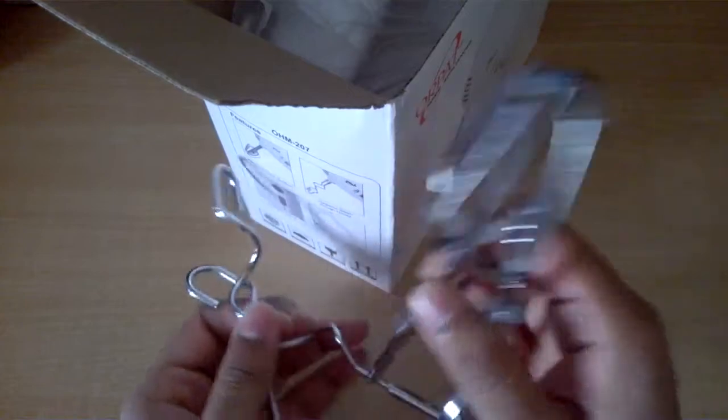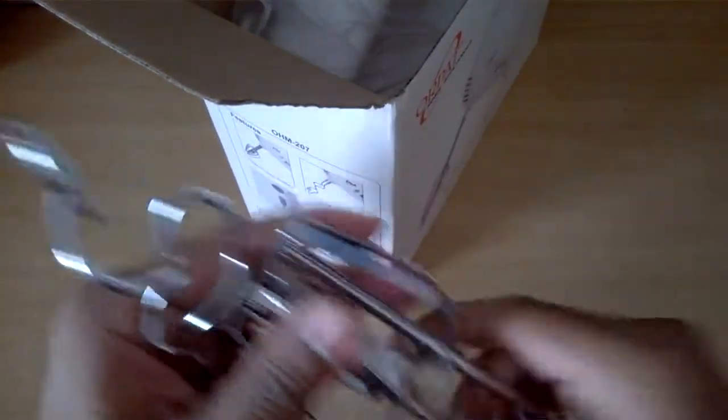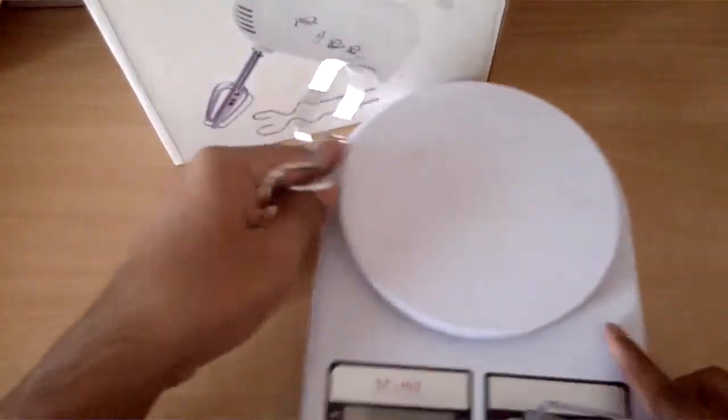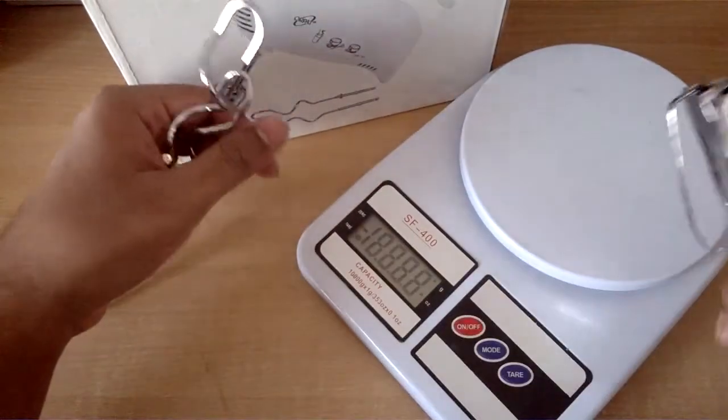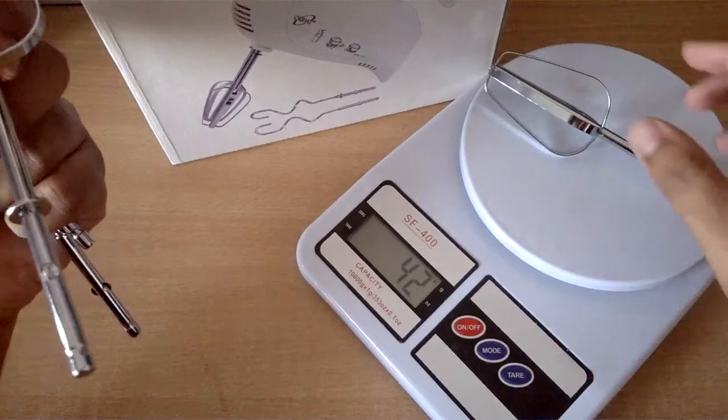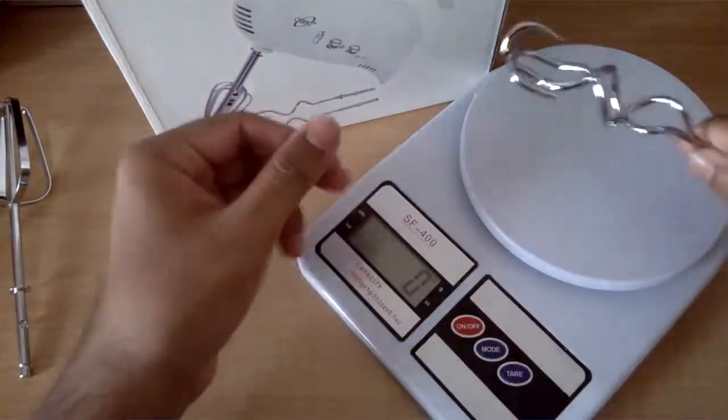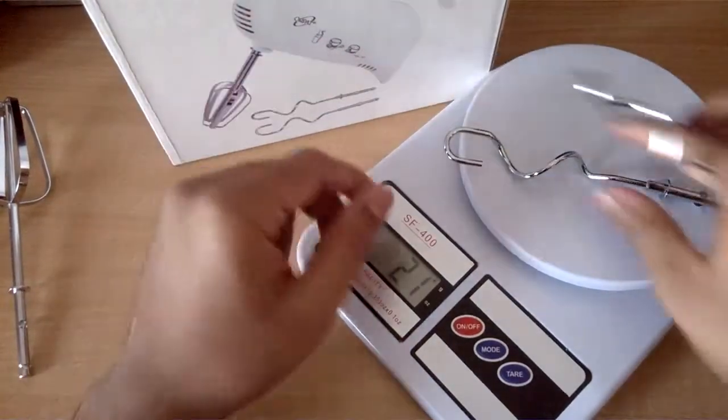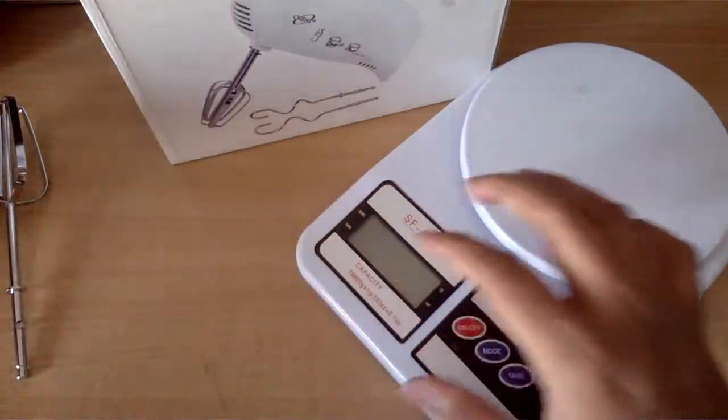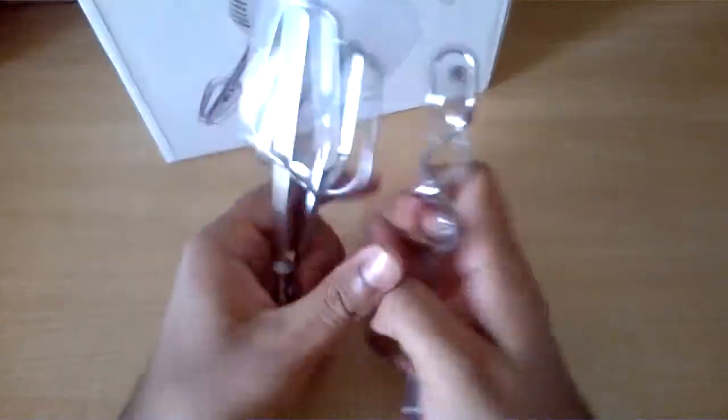Then you have four things, two of them are beaters, steel beaters, good quality. Let's check their weight. Two of them is 42 grams and then you have two steel dough hooks, 21 grams. Let's keep them aside. So these are the four things that you get, two steel beaters and two dough hooks inside the box.